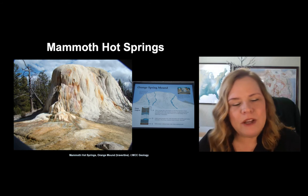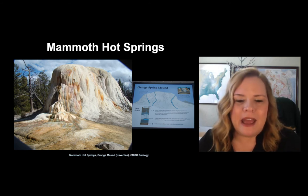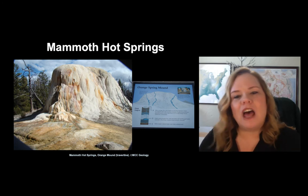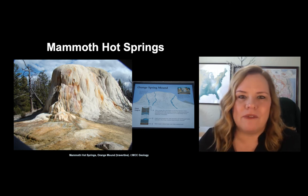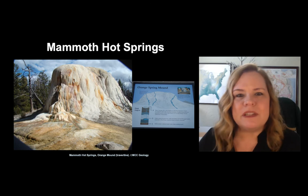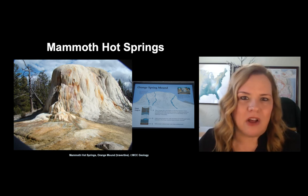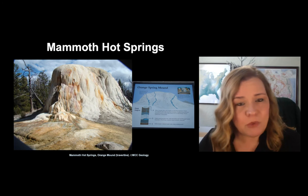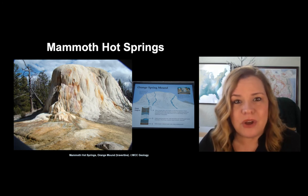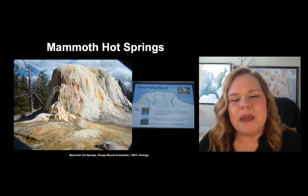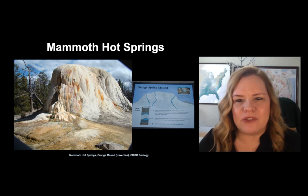This is Orange Mound in Mammoth Hot Springs. Notice the colors — they come from thermophiles. This is re-precipitated limestone that forms the unique rock called travertine. That's important enough to know: travertine is what makes up the Mammoth Hot Springs area of Yellowstone.